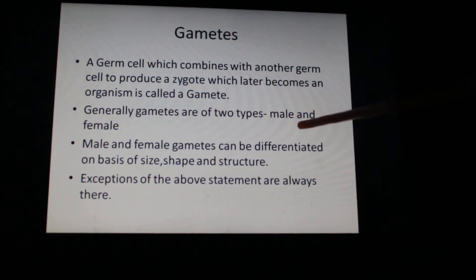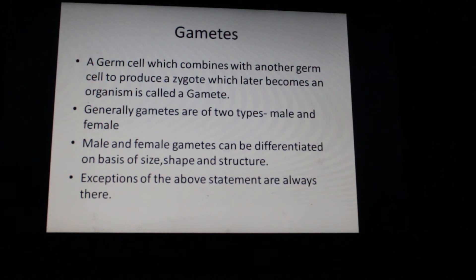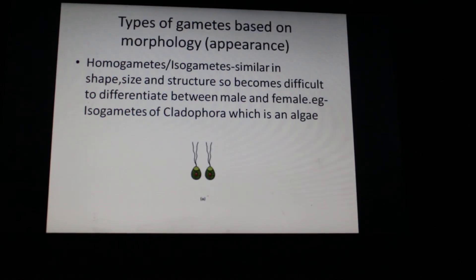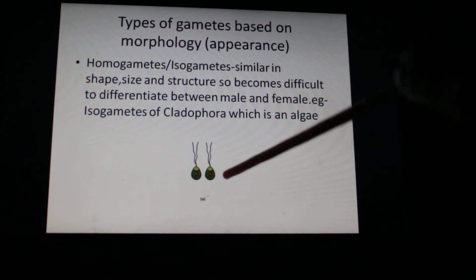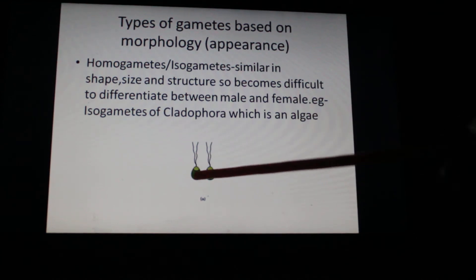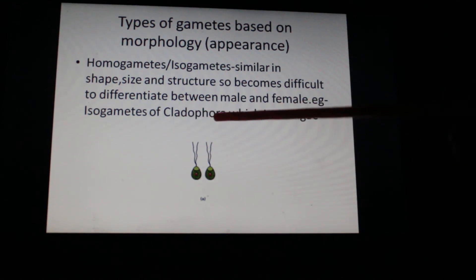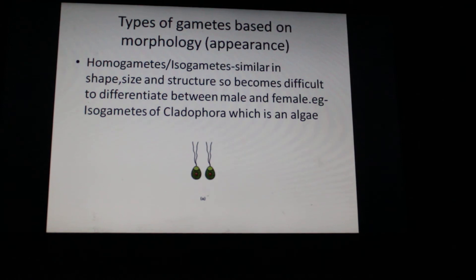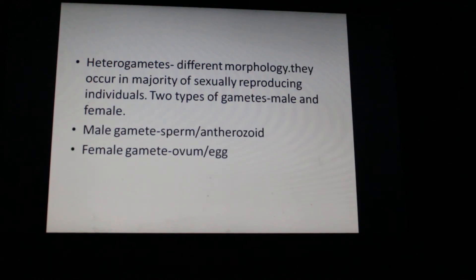Gametes are of two types: male and female. Male and female gametes can more often than not be differentiated on the basis of size, shape, and structure, but there are some exceptions. On the basis of appearance, gametes are of two types. Homogametes are similar in size, shape, and structure, so you can't differentiate which is male and which is female — for example, in the algae Cladophora, the two gametes look the same and are called homogametes or isogametes.